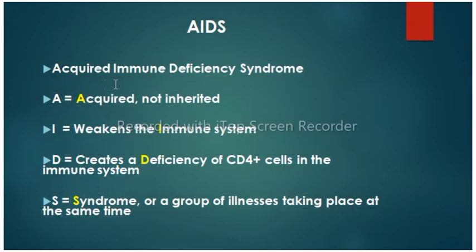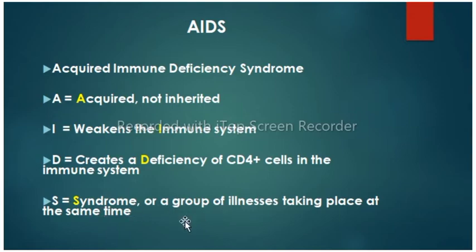AIDS is acquired immunodeficiency syndrome. Syndrome means a group of illnesses. A stands for acquired, not inherited. I stands for weakens the immune system. D creates the deficiency of CD4 cells in the immune system. And S for syndrome — a group of illnesses taking place at the same time.